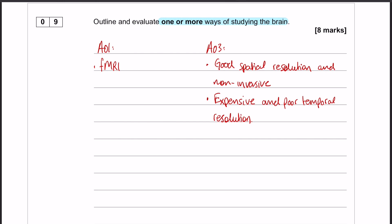Now, something to bear in mind for ways of studying the brain: the evaluations are a little bit strange because they're quite short, which means that as a general rule, an evaluation paragraph is going to have two points in it, but they're going to be fairly short points.